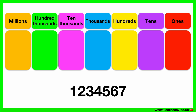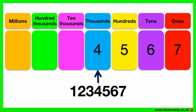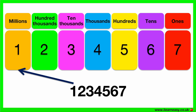Here is the last example. This is a seven-digit number. Let's separate the different numbers according to their place values. The number 7 goes in the ones group, the number 6 goes in the tens group, the number 5 goes in the hundreds group, the number 4 goes in the thousands group, the number 3 goes in the ten thousands group, the number 2 goes in the hundred thousands group, and the number 1 goes in the millions group. So this number is 1,234,567.